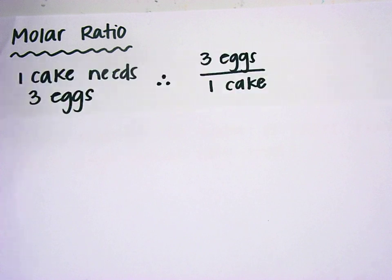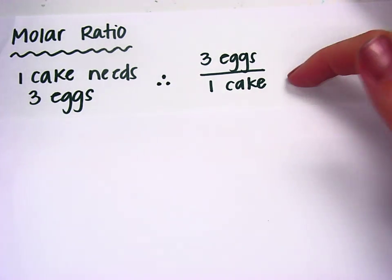and you know that one cake needs three eggs. So you can set up the ratio: three eggs are in one cake,